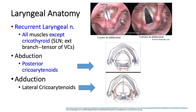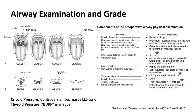Airway examination grade: when a patient opens their mouth, if we can see the tonsillar pillars, uvula, hard palate, and soft palate, it is a Class 1 Mallampati airway. Class 3 is where you cannot see the epiglottis, only the base. Class 4 is where you can see only the hard palate. During laryngoscopy, Grade 1 is ideal — seeing the vocal cords, epiglottis, and cuneiform cartilages. Grade 3 is seeing only the epiglottis, and Grade 4 is not seeing the epiglottis at all.